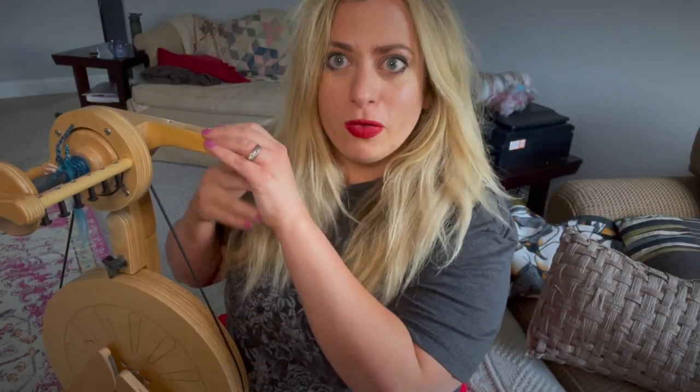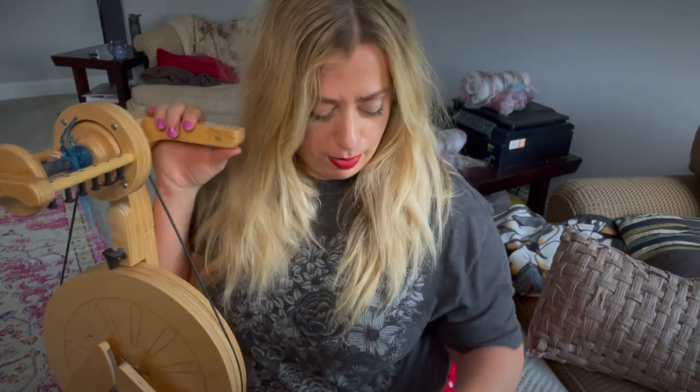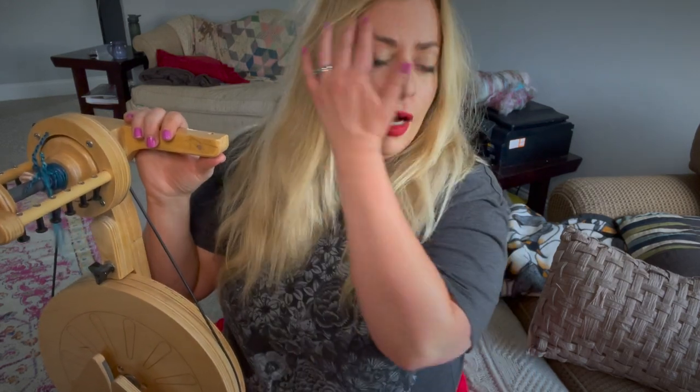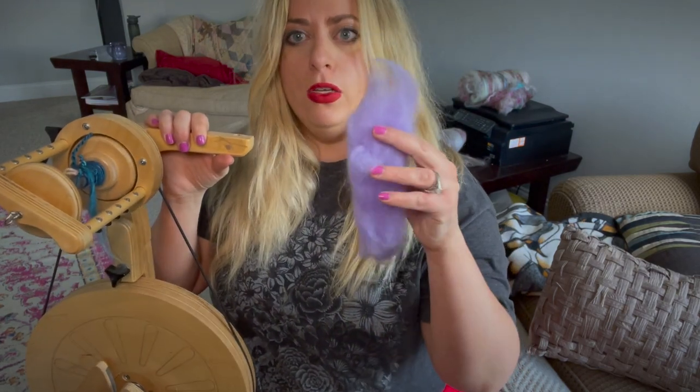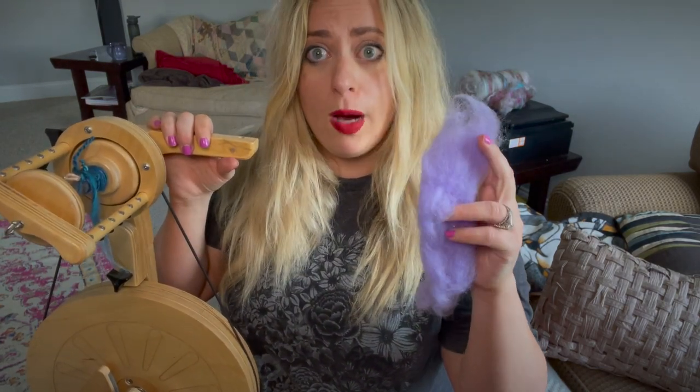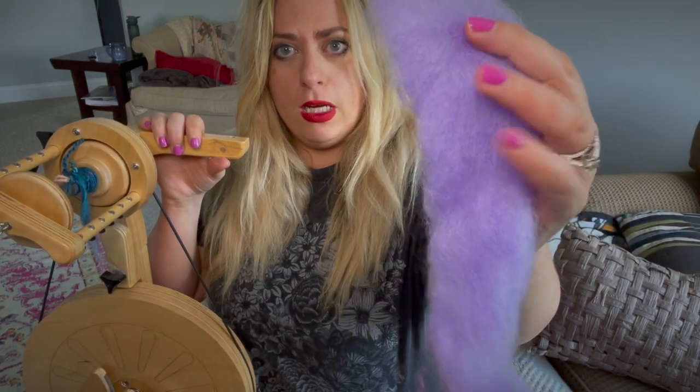Hey everybody, since we just did a woolen spinning video I wanted to bring the old Pollywog back and do a worsted spinning intro just for comparison. For this one I've got my Pollywog back and I've just got some Romney, a small piece of roving. You can see all the fibers are going in one direction versus being twisted as a rolag.